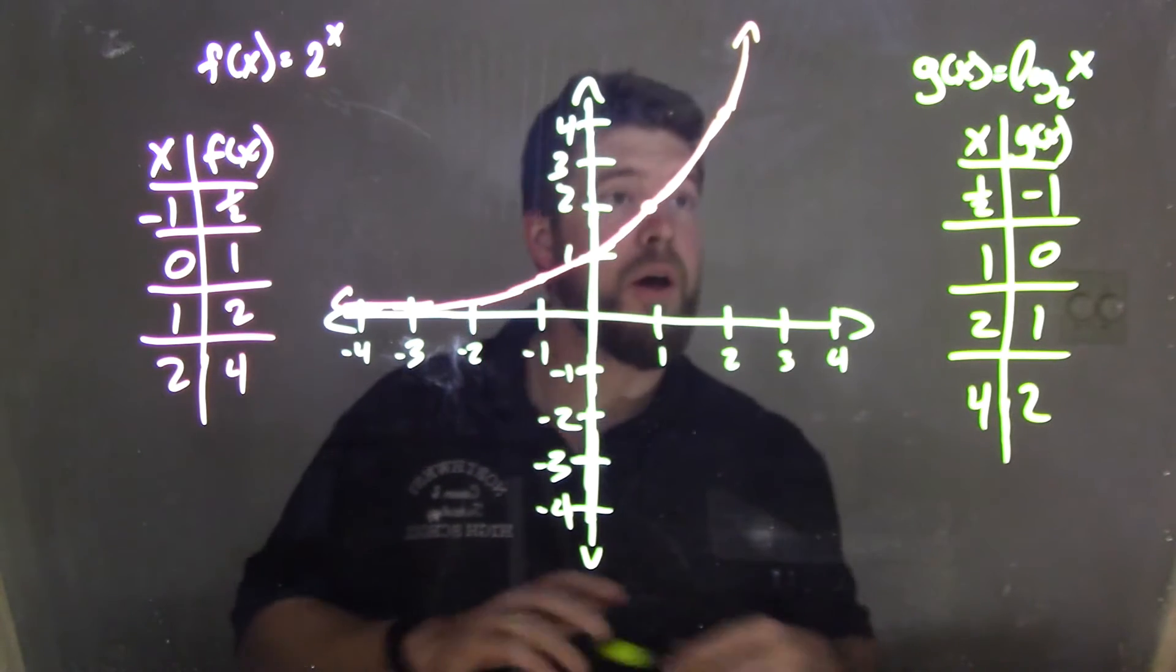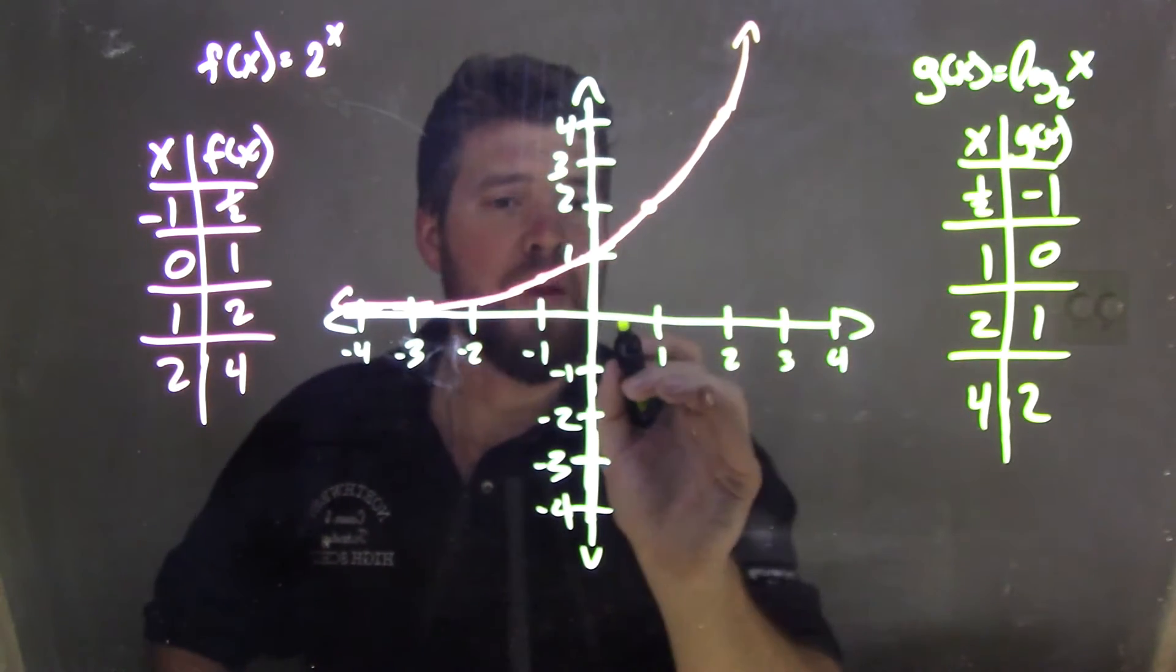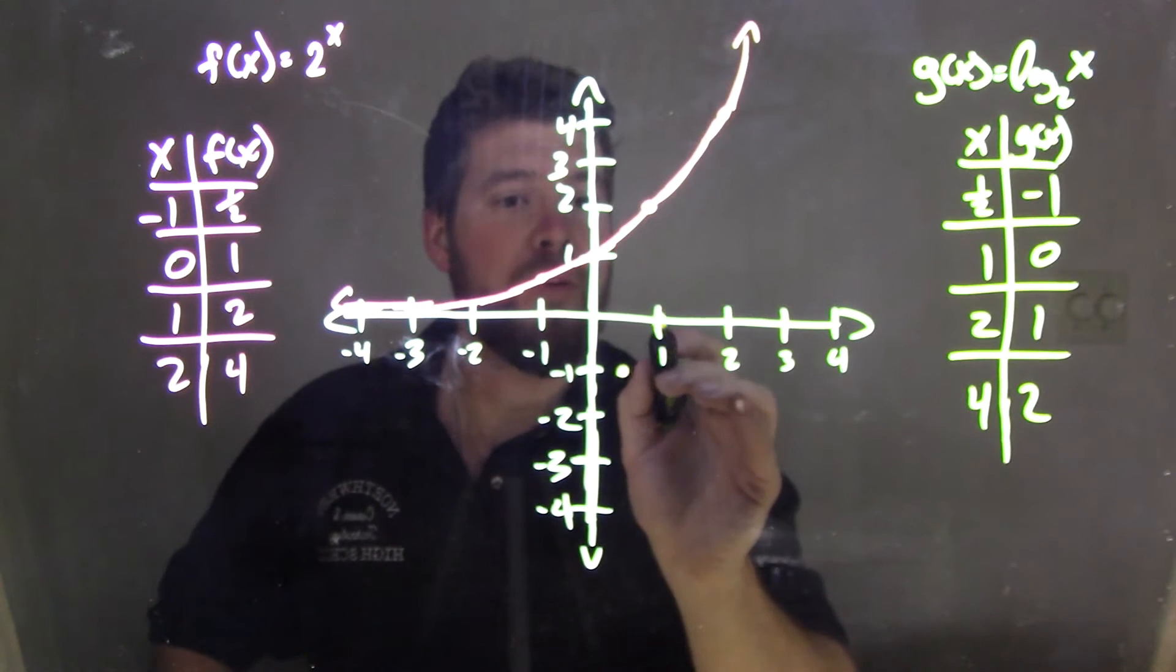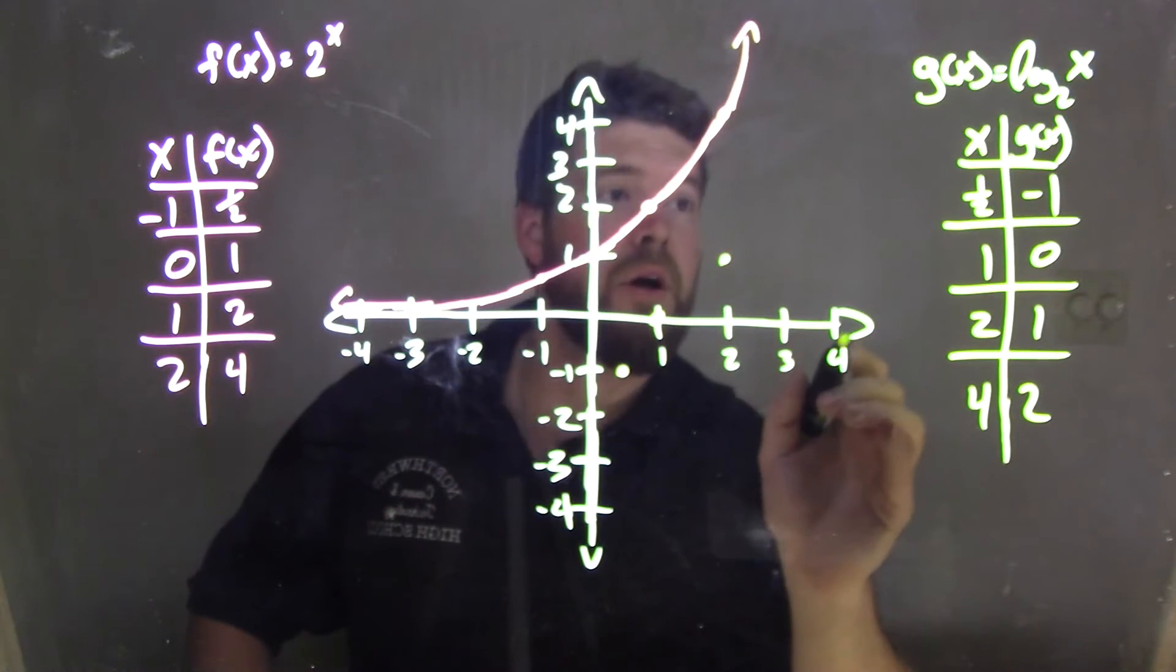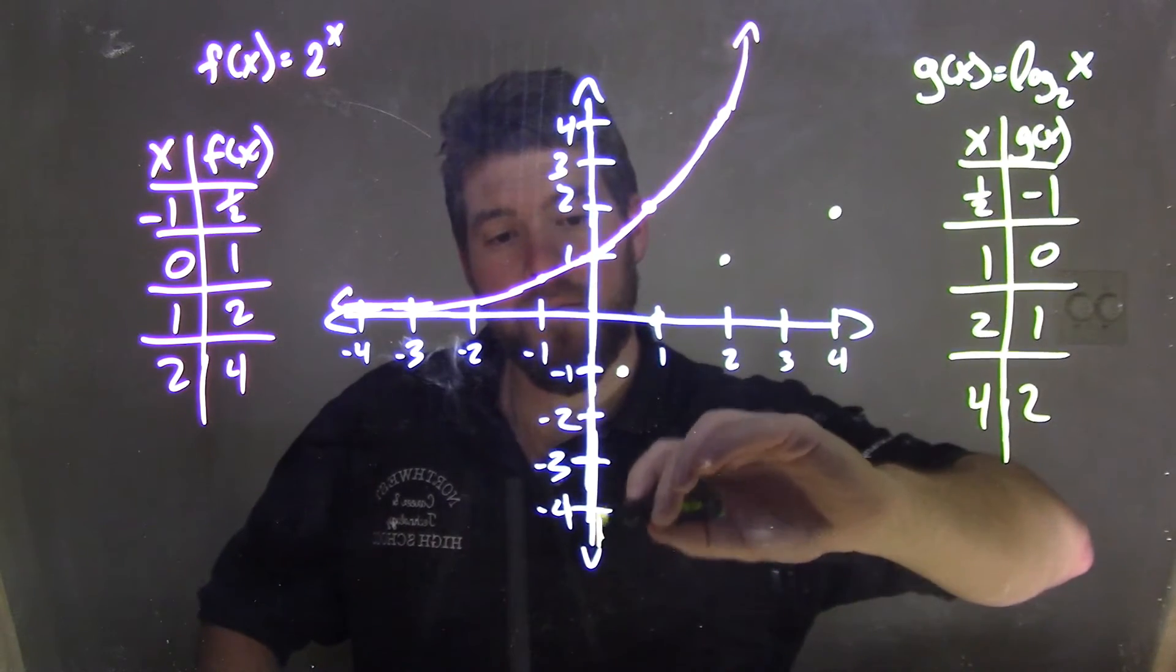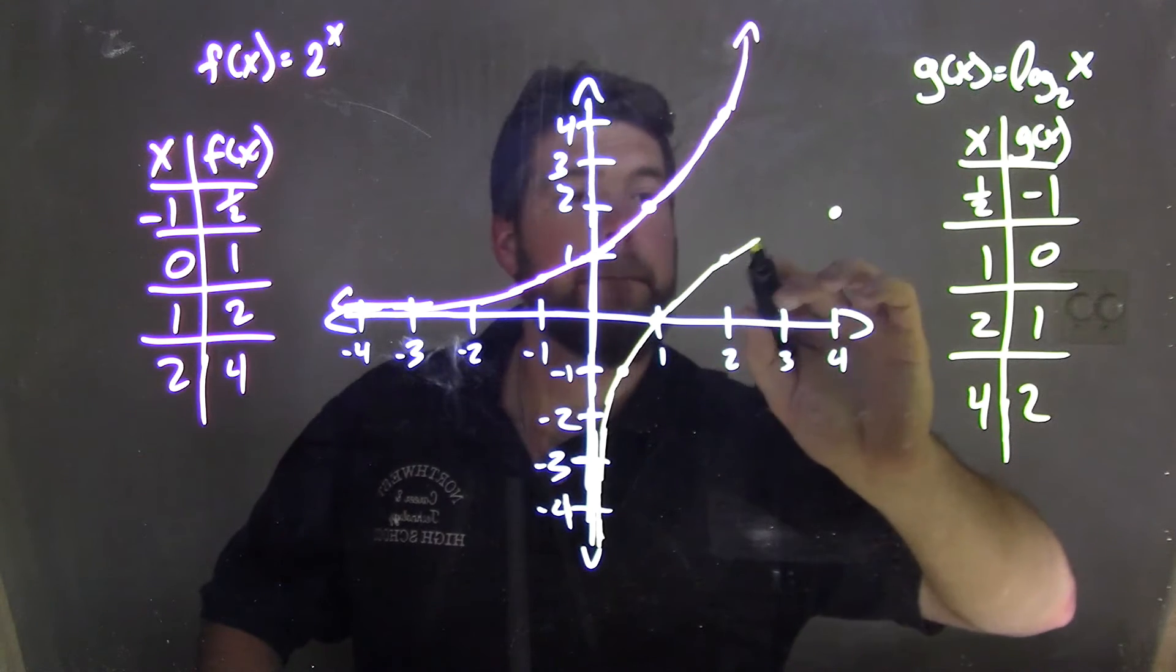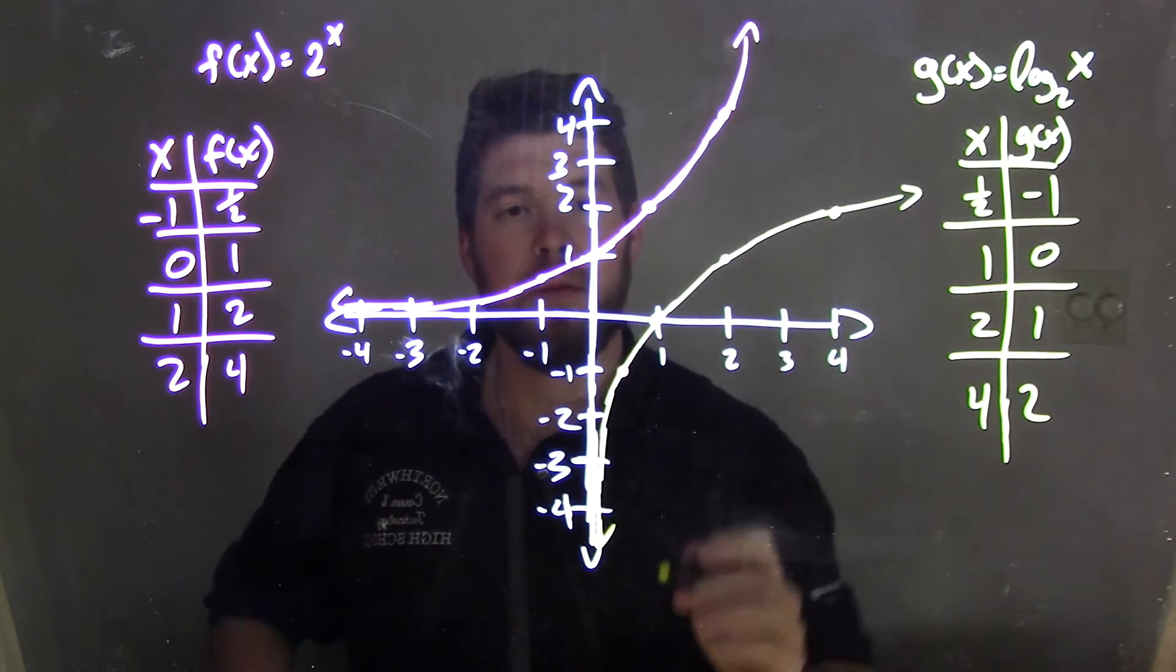And if I graph g(x), plot my points here. When x is 1/2, we have -1. When x is 1, we have 0. When x is 2, we have 1. And when x is 4, we have 2. So I've already graphed this. We have that. Now notice,